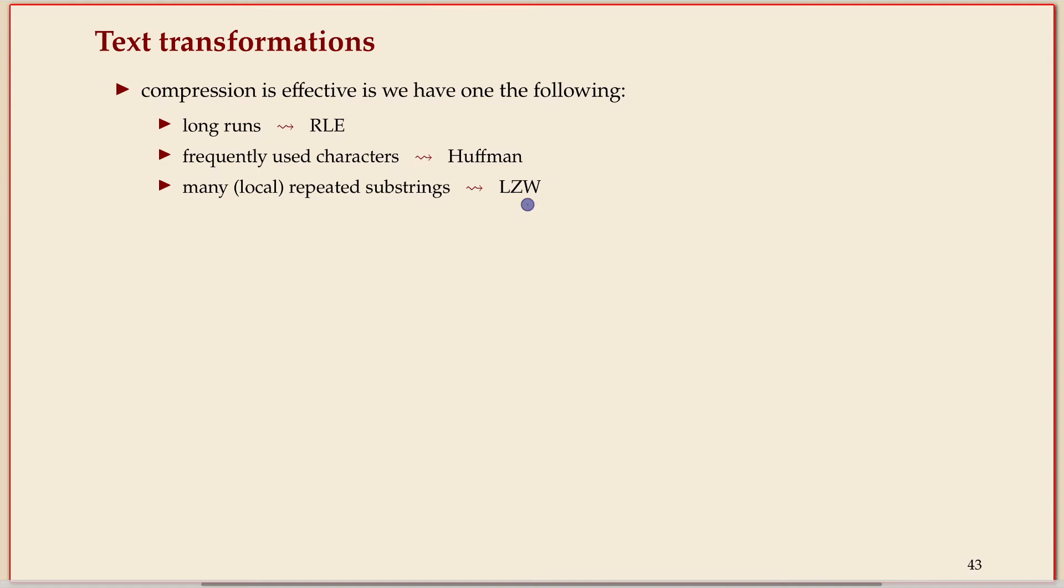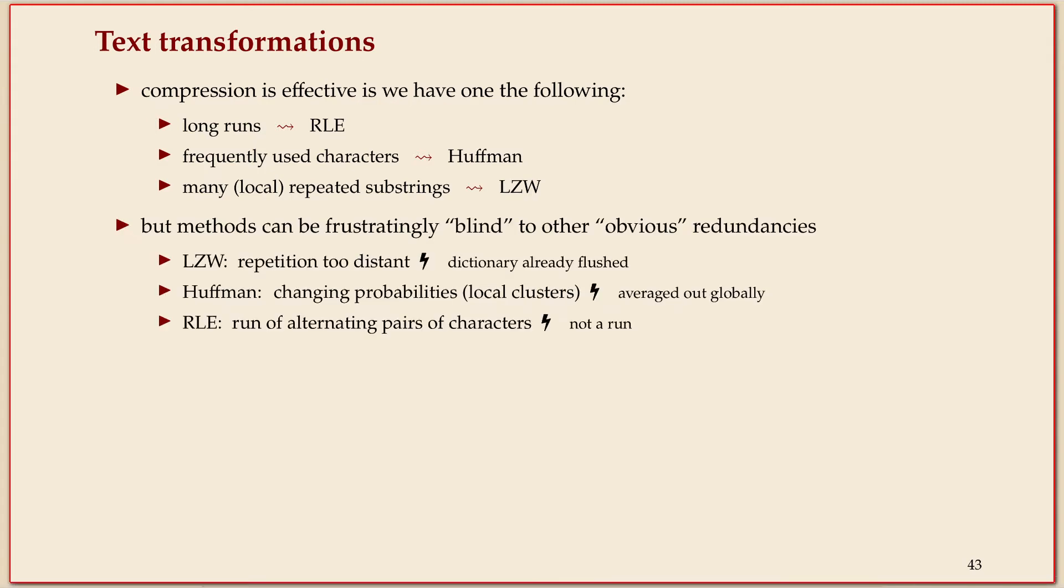There's many things where it is frustratingly ineffective to use the compression methods we've just seen as they are, even though as a human if you look at it you see there is something going on in terms of repetition that you would like to capture. A simple example for Lempel-Ziv-Welch is what I mentioned before - if you have an exact copy from very far ago, then you might not find it just because the dictionary is just not big enough.